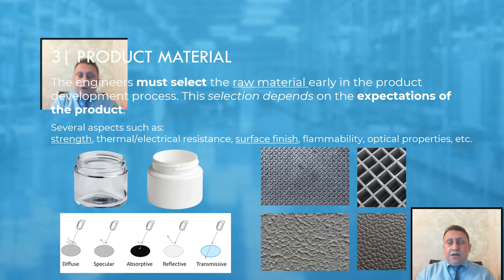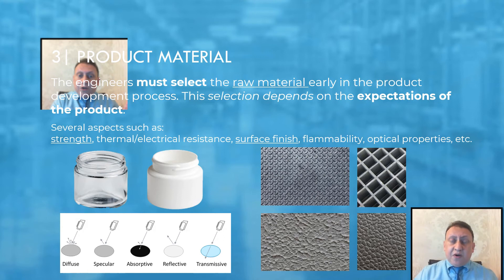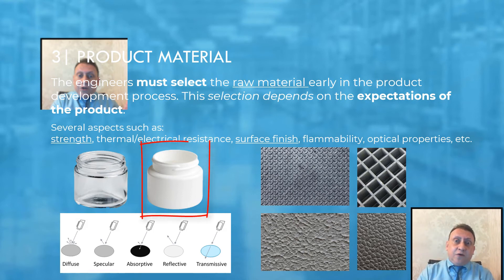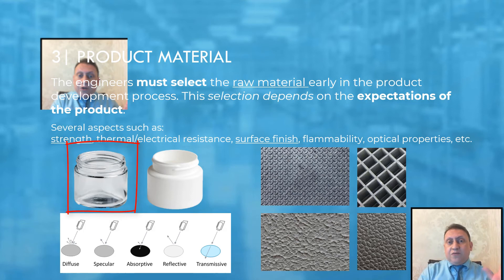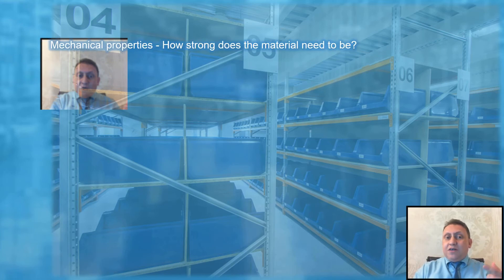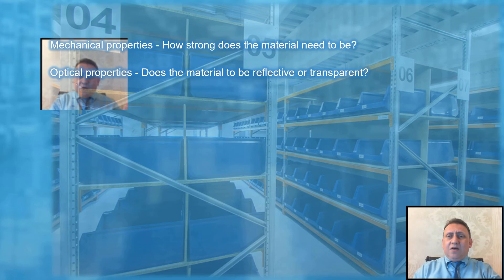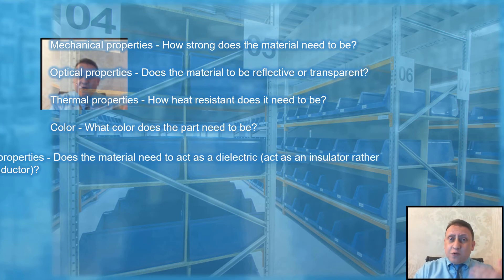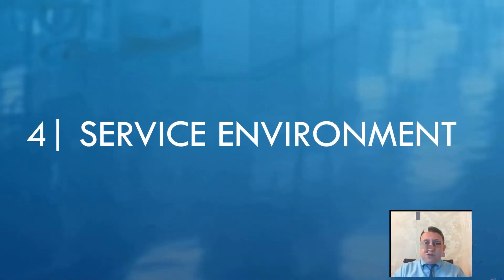The third aspect is product material. When designing a part, you have to think about many material aspects. For example, does the customer need the part to be colorful or transparent? For colorful parts, you might select high-density polyethylene, polypropylene, or PVC for injection molding. For transparency, you'd look at PET — and the price per kilogram for PET is very different from HDPE. You also need to consider optical properties, surface texture, mechanical properties, strength, thermal properties — many questions come to mind when thinking about material selection.